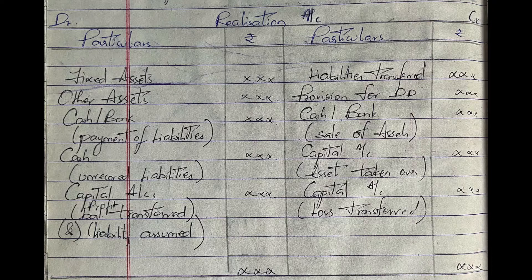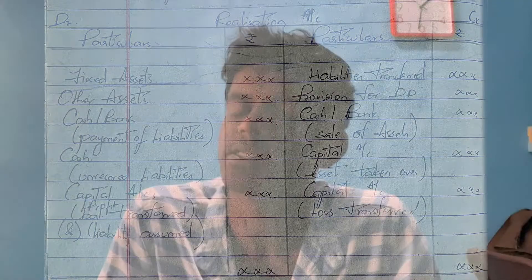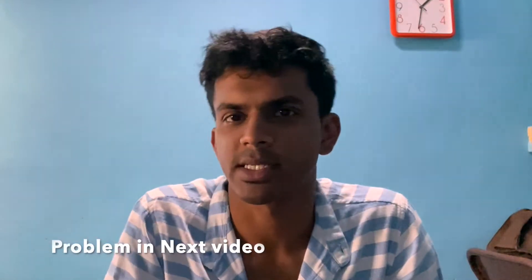For assets or liabilities taken over by partners: asset takeover goes to the credit side as the concerned partner's capital account; liability takeover goes to the debit side in the same way. After all this, if the debit side balance remains, it's a profit; if the credit side balance remains, it's a loss — just like the Revaluation Account — and then it is transferred to partners. It's very simple, so let's just do a problem to make sure you understand this better.